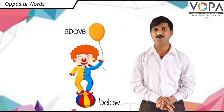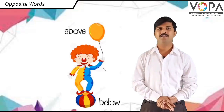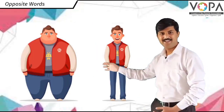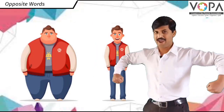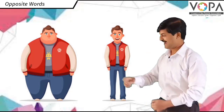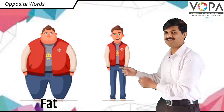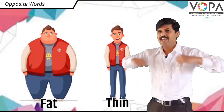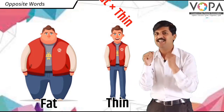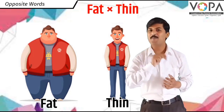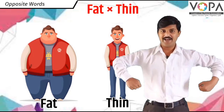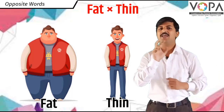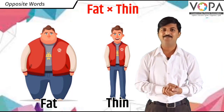Let's look at another example. See these men. One man is fat and the other man is thin. Fat and thin are two opposite words. In Marathi: jada ani patla — he duni ulat artha che shabda ahet.